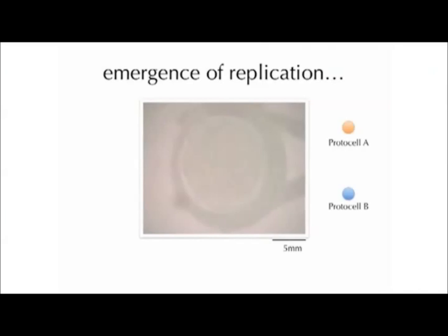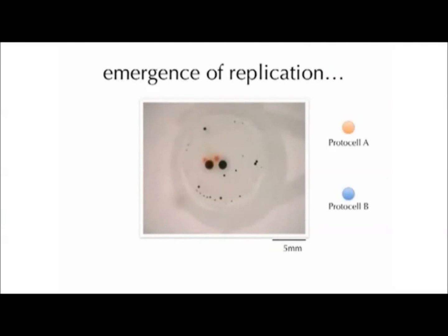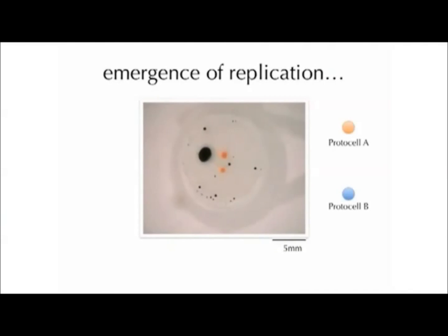I repeat this experiment a bunch of times, and one time something very interesting happened. I added these protocells together and protocell A and protocell B fused together to form a hybrid protocell AB — that didn't happen before. Protocell AB likes to dance around for a bit, like protocell B does the fusion. But then something even more interesting happens: when these two large hybrid protocells fuse together, we now have a dancing protocell and a self-replication event.